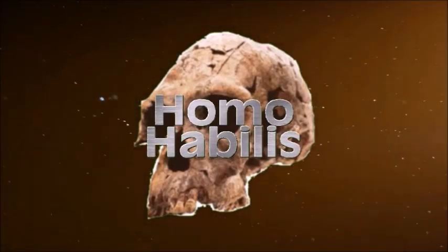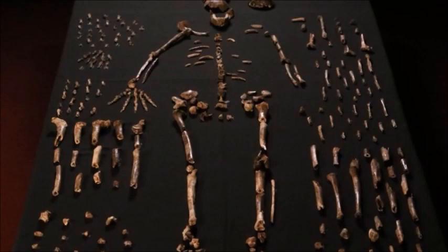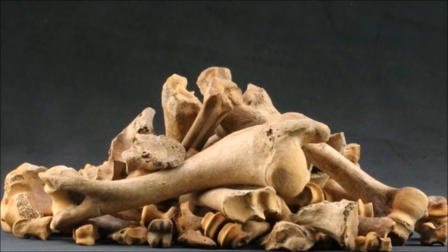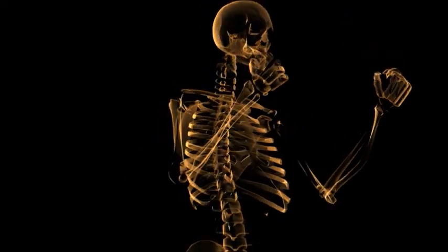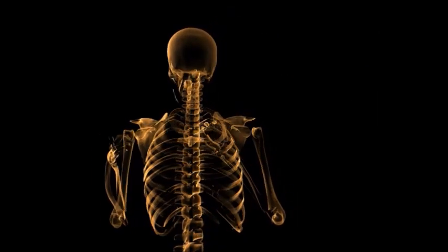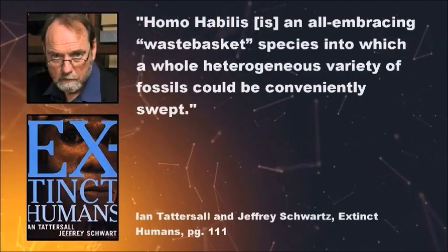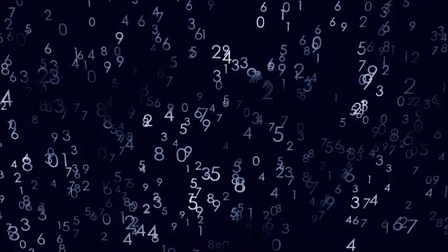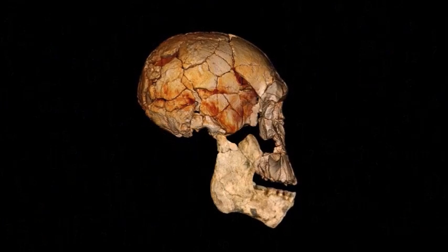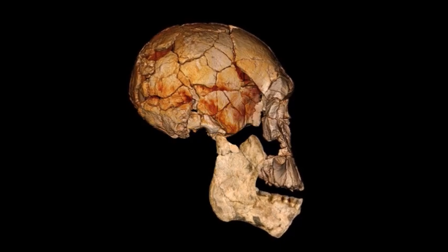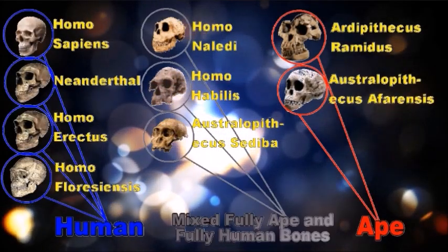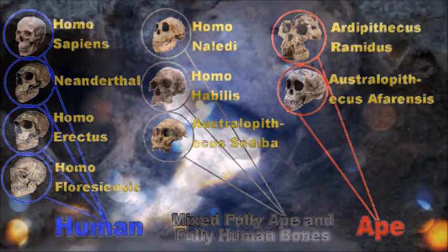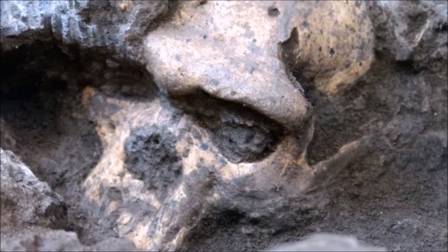Homo habilis is a non-existent taxon that only continues because it provides a much-needed link between apes and humans. It exists merely as a convenient way to classify unknown hominid bones, as recognized by leading experts in paleoanthropology. The taxon is comprised primarily of australopithecine bones but also contains some bones from Homo. Tattersall and Schwartz have called Homo habilis 'an all-embracing wastebasket species into which a whole heterogeneous variety of fossils could be conveniently swept.' Even if habilis were a legitimate taxon, it could not be an ancestor of modern humans because the earliest habilis bones date to later than the earliest Homo bones. Australopithecus sediba and Homo naledi face similar problems — waste-bin categories consisting of both australopithecine and Homo bones. Thus, as far as the fossil record is concerned, australopithecines and Homo have always been separate categories. In plain English, there is no convincing reason to link apes and humans.